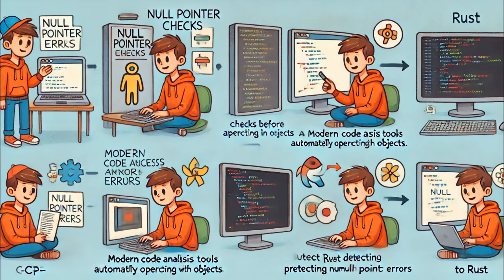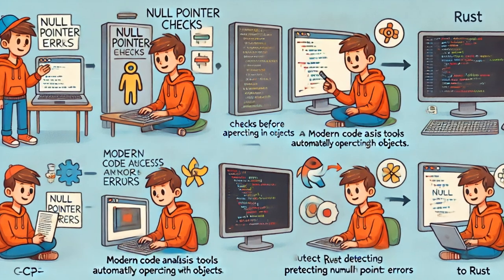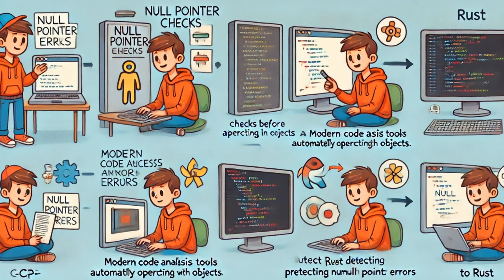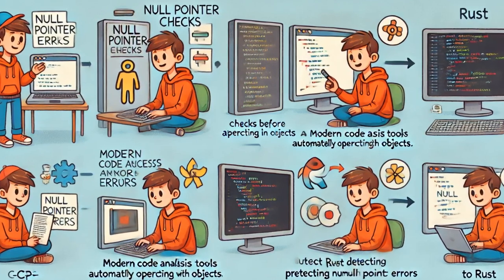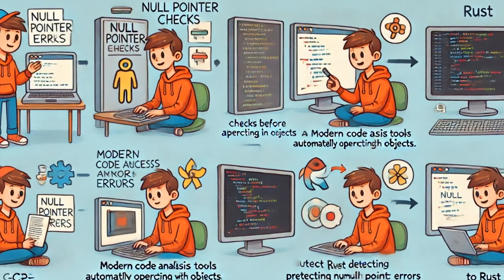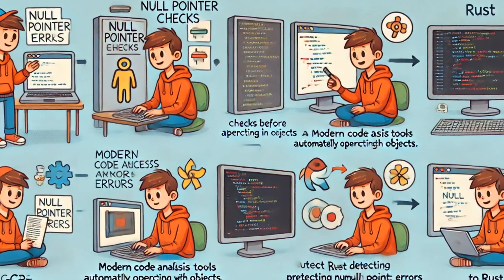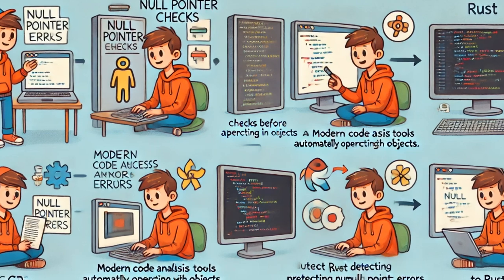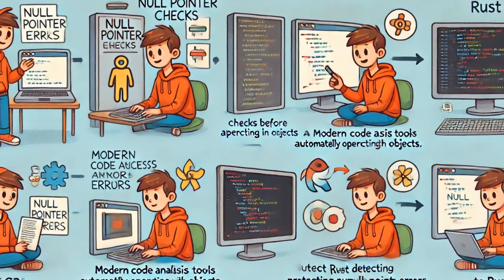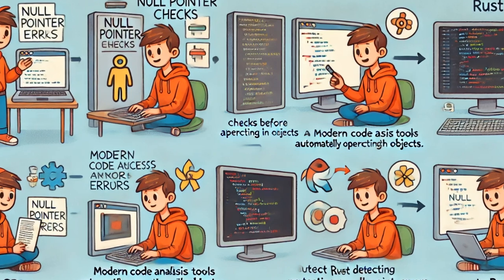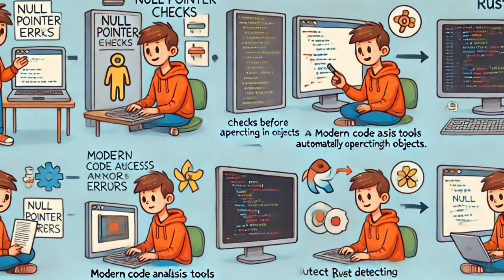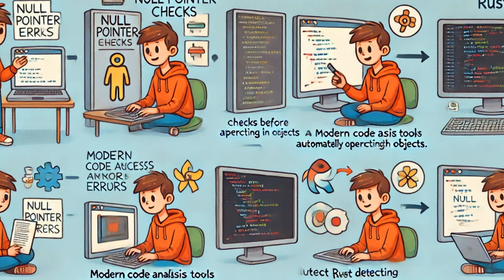To prevent such errors, the following suggestions are made. First, null pointer checks — programmers must always perform null pointer checks before operating on objects. Second, use of modern tools — modern code analysis tools that can automatically detect memory access errors should be used. Third, language change — instead of C++, modern programming languages like Rust that manage memory safety better should be preferred. Rust detects null pointer errors during compilation and prevents such errors from reaching production.